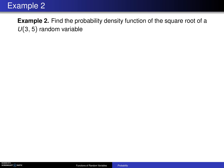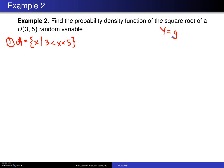As was the case last time, the steps on this particular problem will be numbered consistent with the algorithm given earlier. In example 2, find the probability density function of the square root of a Uniform(3,5) random variable. Step 1 is to find the support of the random variable X, denoted by script A. Script A is the set of all x such that x lies between 3 and 5, because we have a Uniform(3,5) random variable and we are interested in the distribution of Y = g(X) = √X.